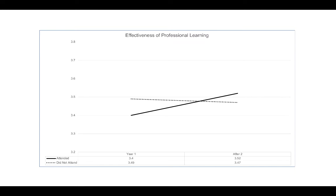What you see there is a black line representing our participants that attended this effective professional learning based on the standards. We noticed that as a group they grew, while the dotted line shows individuals that did not attend. While initially they began at a higher level, they actually declined over the course of that academic year. The measurement was taken in the spring pre and spring post, with the intervention provided during the intervening academic year.